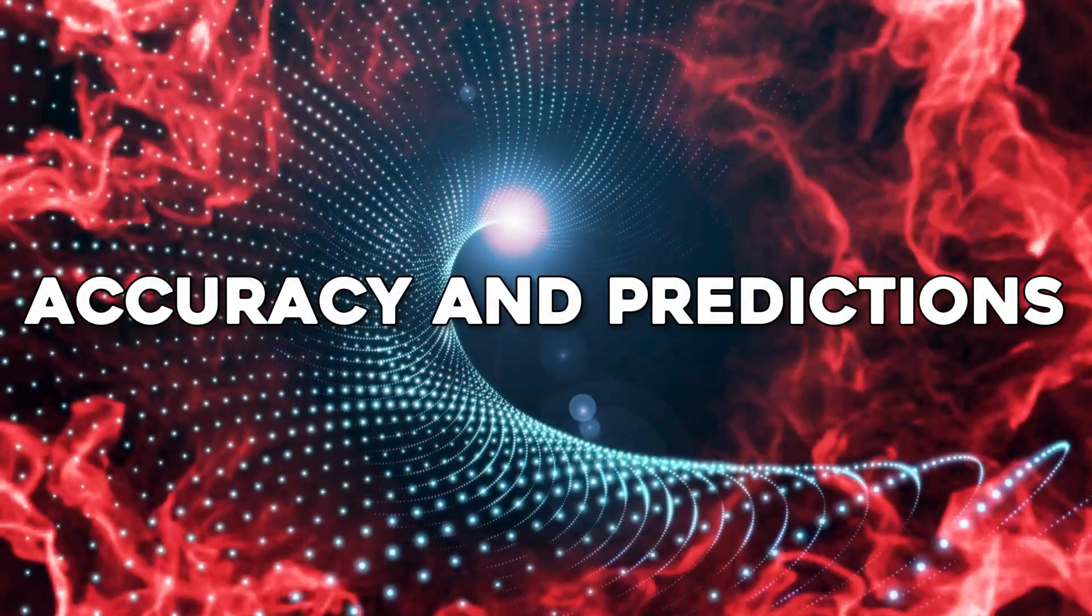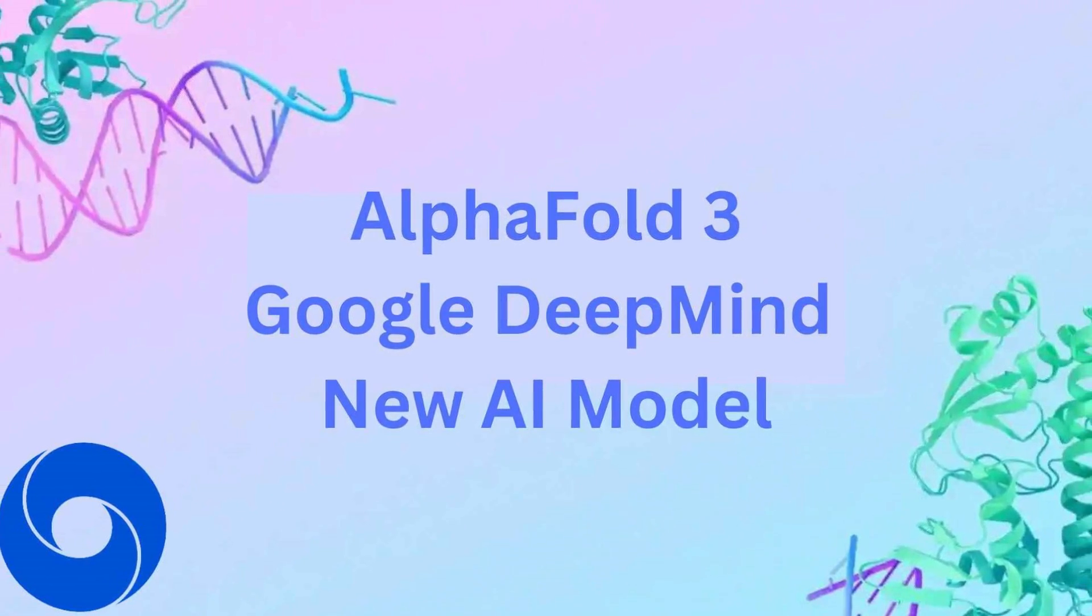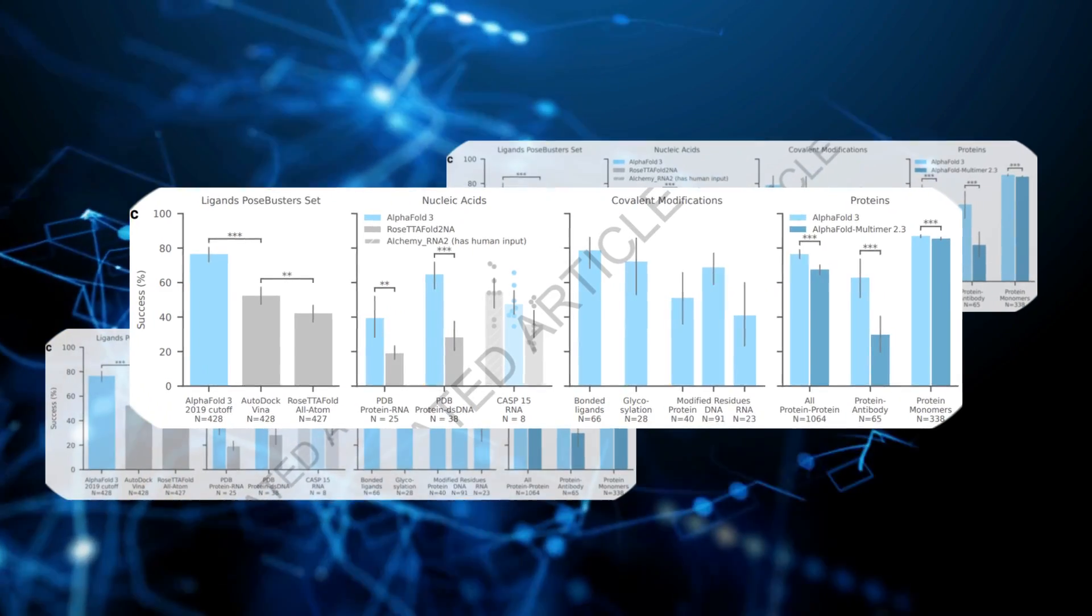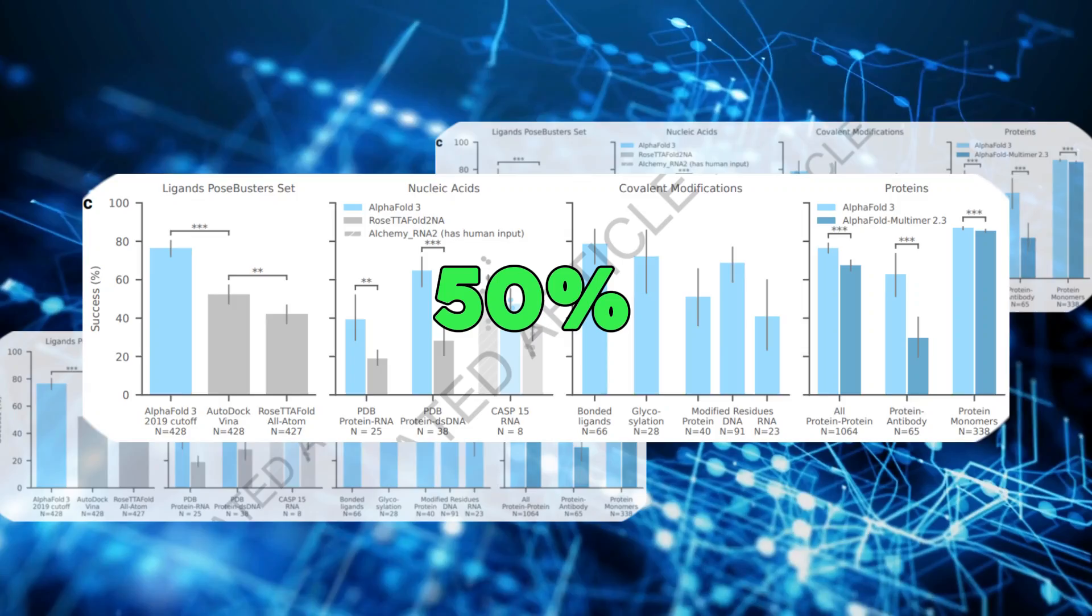Accuracy and predictions. The accuracy of AlphaFold3 is significantly better than older methods. For example, in predicting how different proteins interact, AlphaFold3 has shown accuracy improvements of at least 50% over previous models.